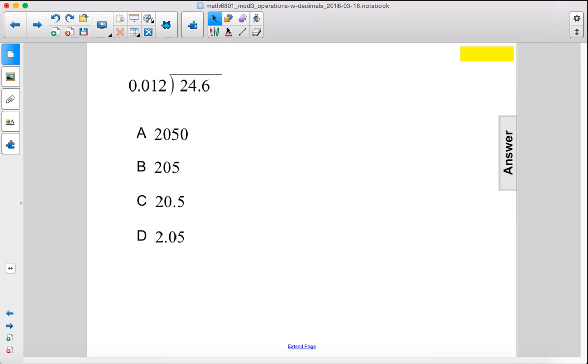24.6 divided by 0.012. Alright, so let's multiply both sides by 1,000. So we move this decimal place over 3.